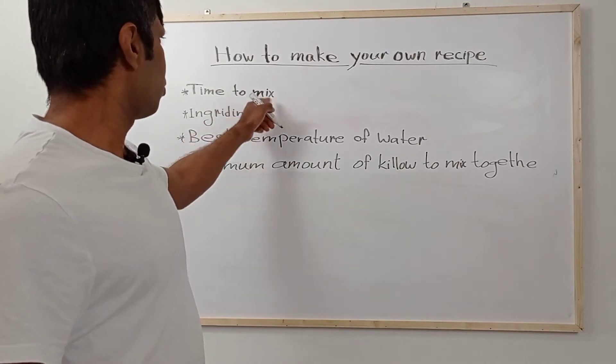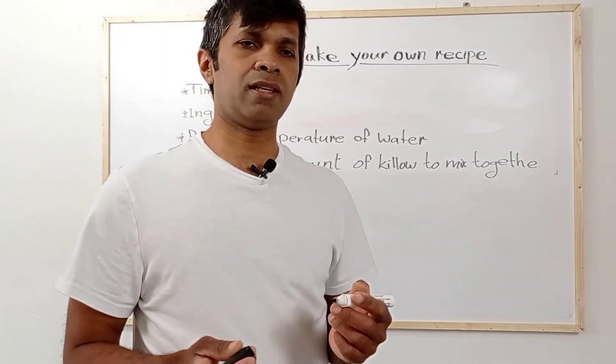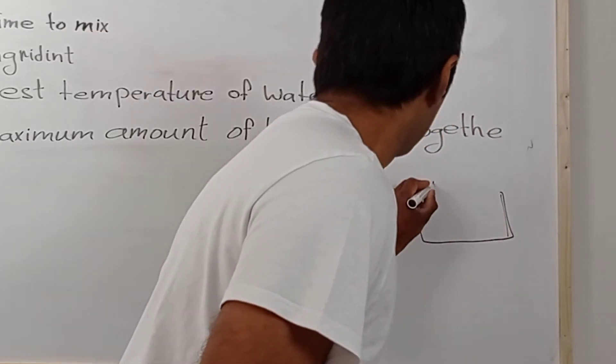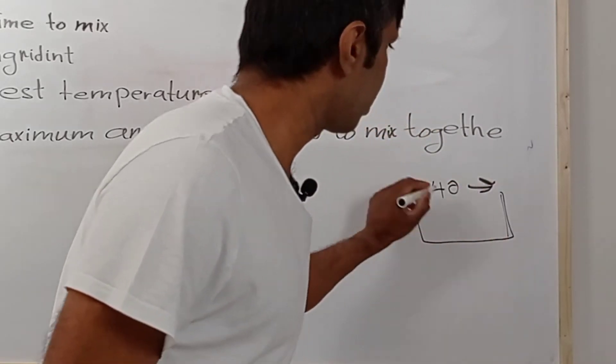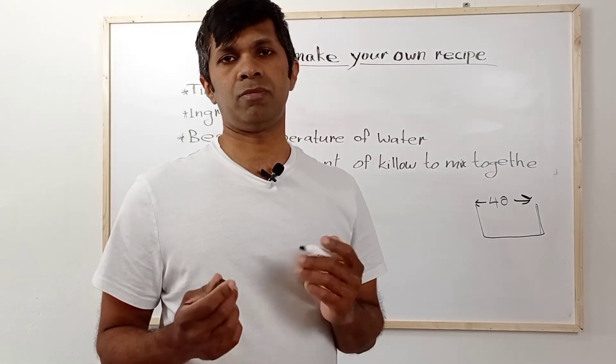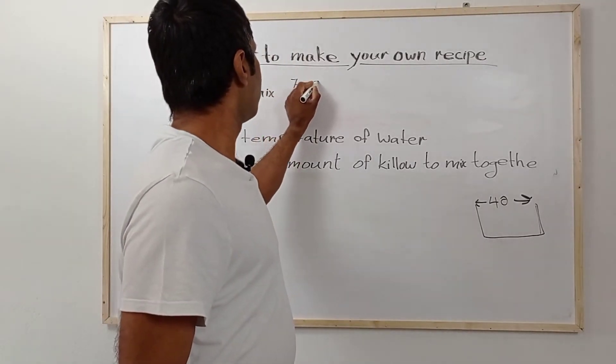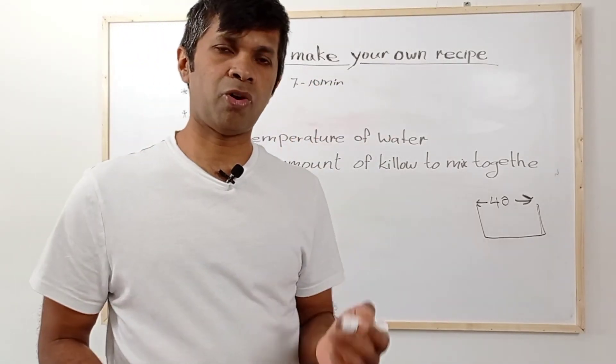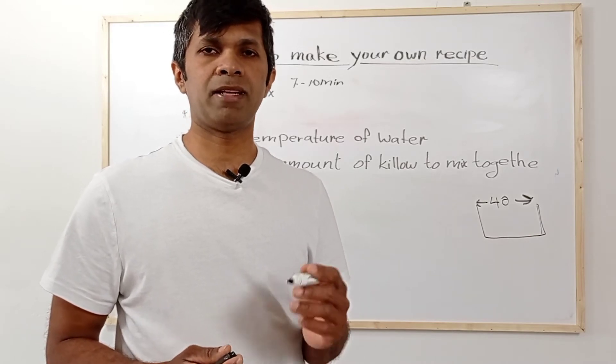When you're looking at time to mix, according to my experience, if you mix with a machine with a bucket size of 40 centimeter diameter, for pizza better maximum 8 kilos to mix together, maybe times 7 to 10 minutes maximum. Because if you mix more and more, the gluten mass will increase as I explained in my second video.